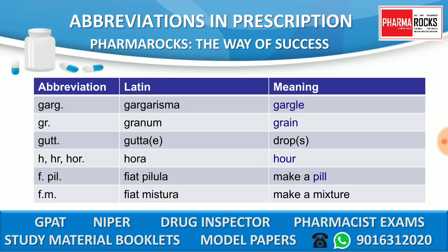GARG means 'gargarisma,' meaning gargle, similar to a mouthwash. GR means 'granum,' meaning grain. GUTT means 'gutta,' meaning a drop or drops — very important and frequently asked. H, HR, or HOR means 'hora,' meaning hour. FIAT PILLULA means make a pill — 'fiat' means make and 'pillula' means pill. FM means 'fiat mistura,' meaning make a mixture.